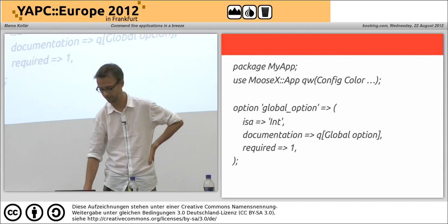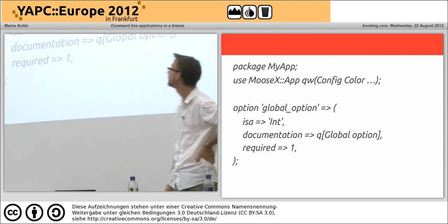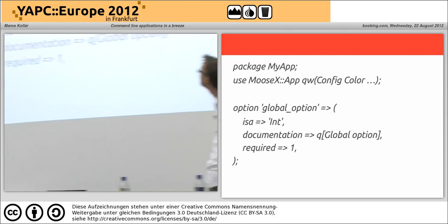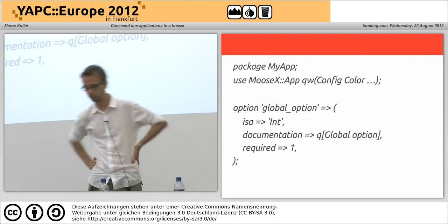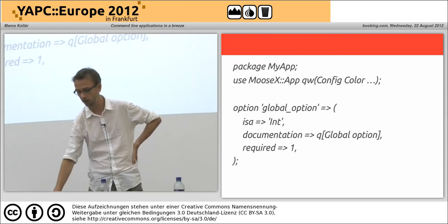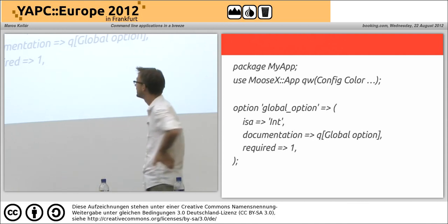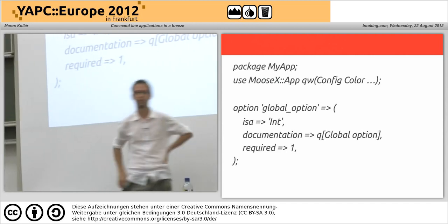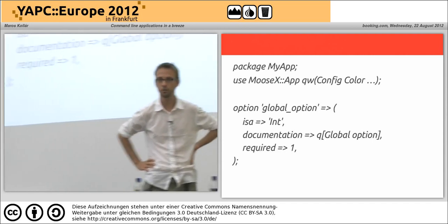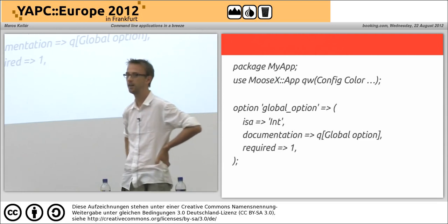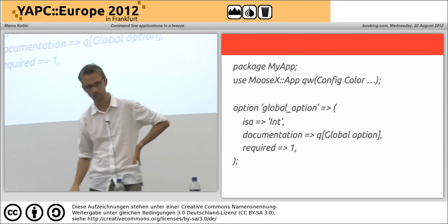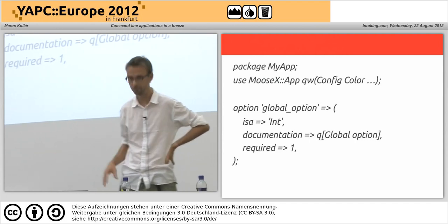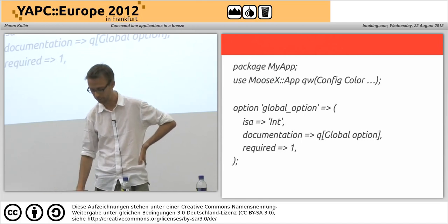Let's have a look. A typical MooseX::App command class would look like: load MooseX::App and specify all the plugins as a list. Then instead of 'has' you say 'option' — so only those attributes declared with 'option' are exposed to the command line interface. It's basically just syntactic sugar, adding a trait to an attribute.